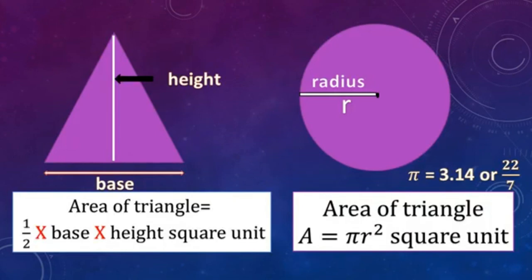For a triangle, area equals half × base × height, where height is the perpendicular distance from the base to the top of the triangle. For a circle, area equals π r², where π equals 3.14 or 22/7, and r is the radius — the distance from the center to the outline of the circle, denoted as r.